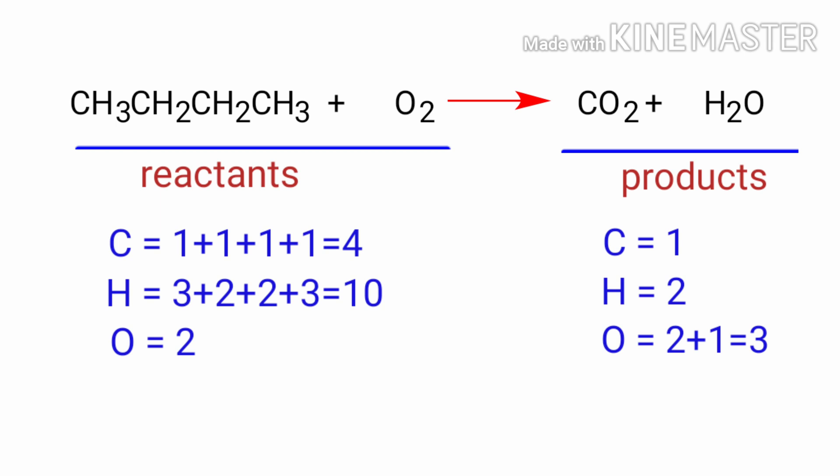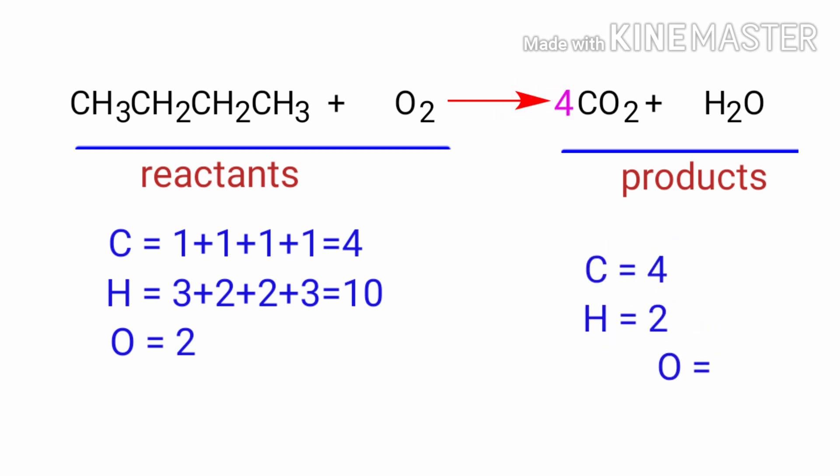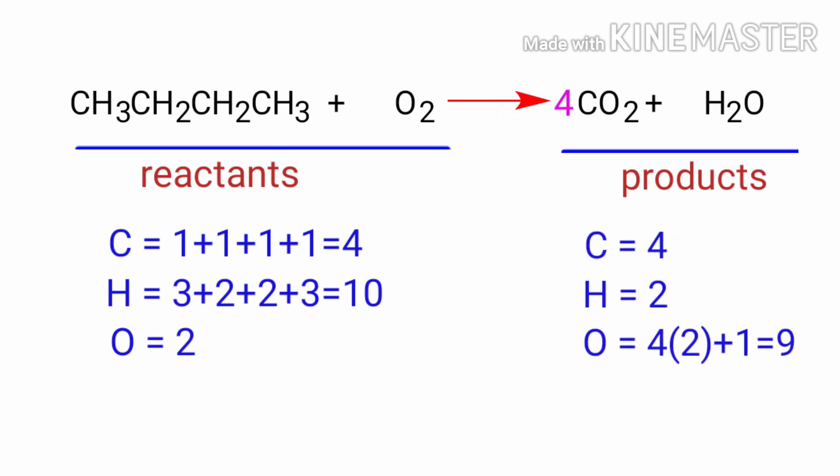In this equation, we need to balance the Carbon Atoms first. To do this, we need to put a coefficient of 4 in front of CO₂. The Carbon Atoms are now balanced.